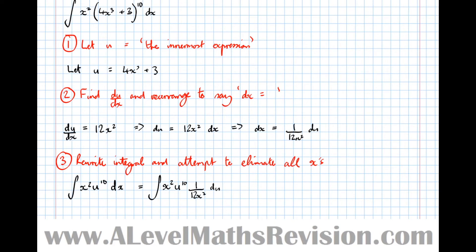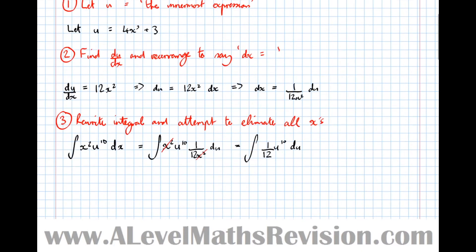So that's actually the equivalent of the integral of x squared u to the 10, and instead of dx, now what we're going to write is 1 over 12x squared du, as we worked out earlier. Now, this is where some of the magic happens, because we can see now that these x squareds cancel with each other. You've got an x squared on the top and an x squared on the bottom. So now the integral that we've got to work with is the integral of a 12th u to the 10 du. And that's much like one that we've seen when you were first introduced to integration.